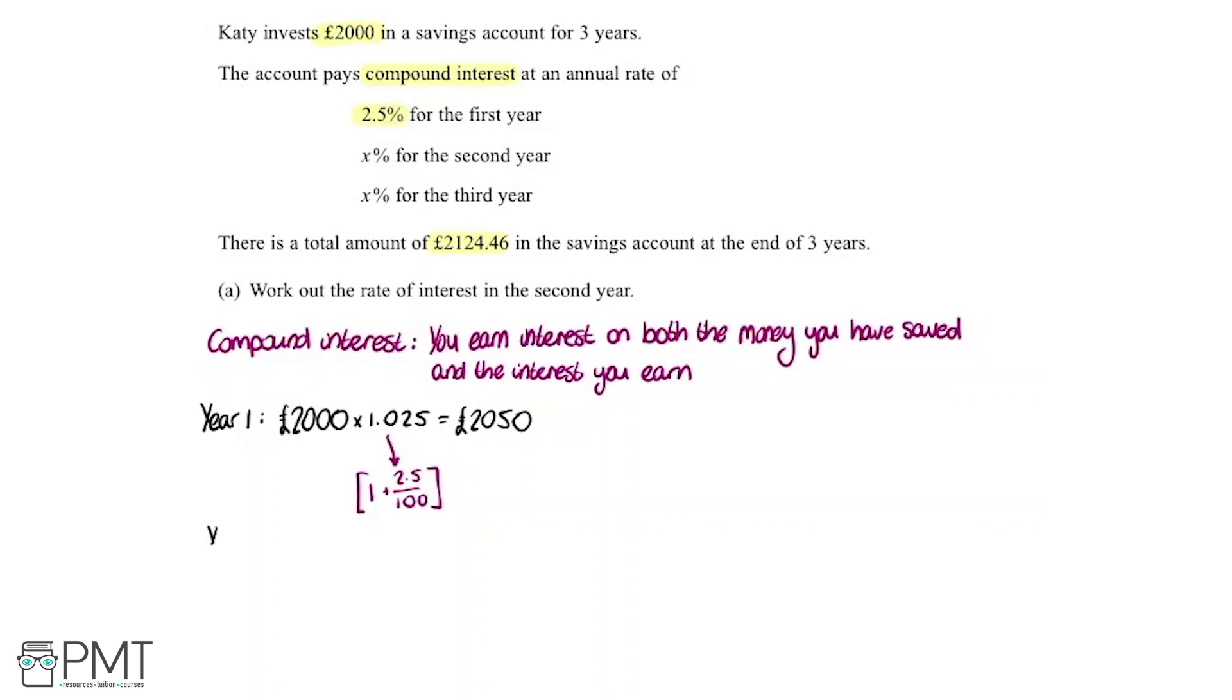We're now going to move on to year two. In year two, remember, because it's compound interest, all of this money is going to be the starting point. You're going to feed that back in starting with £2,050. We're told there is an interest of x%, but obviously we don't know what that is at the minute.